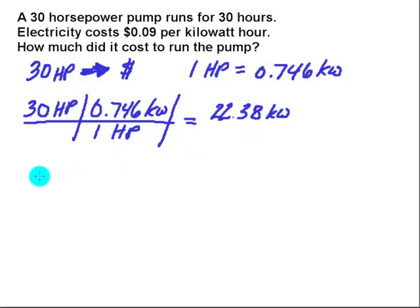Now, my pump ran for 30 hours. So I'm going to take that 22.38 kilowatts that it used. And I'm going to multiply, always put your units in there, kilowatts. And multiply that by my 30 hours. And what I'm going to find is if I multiply those two things together, I end up with a number.